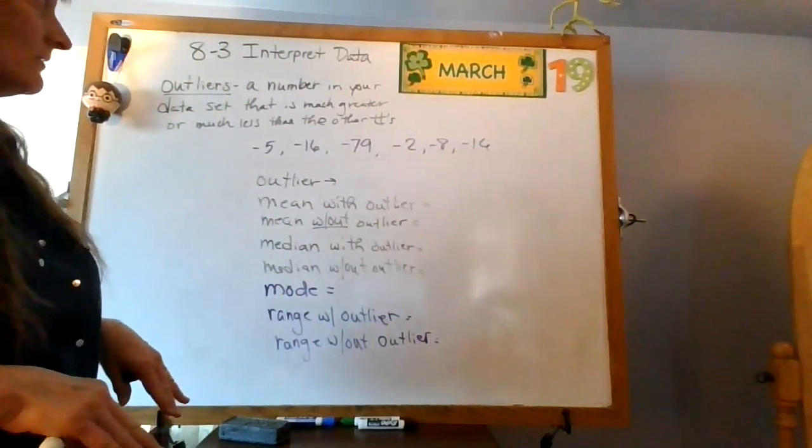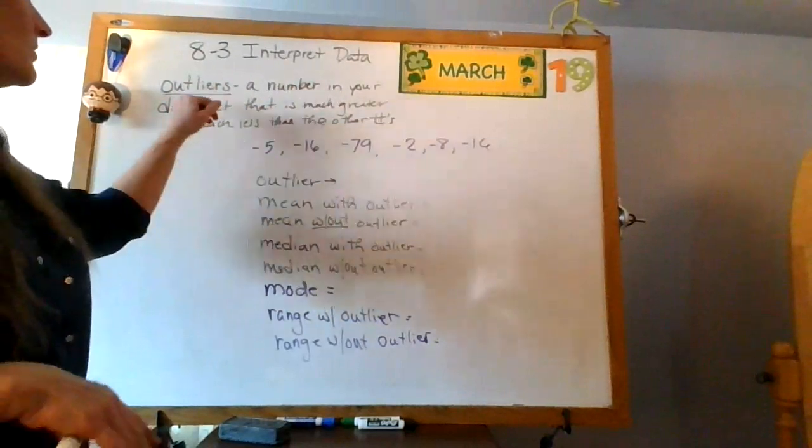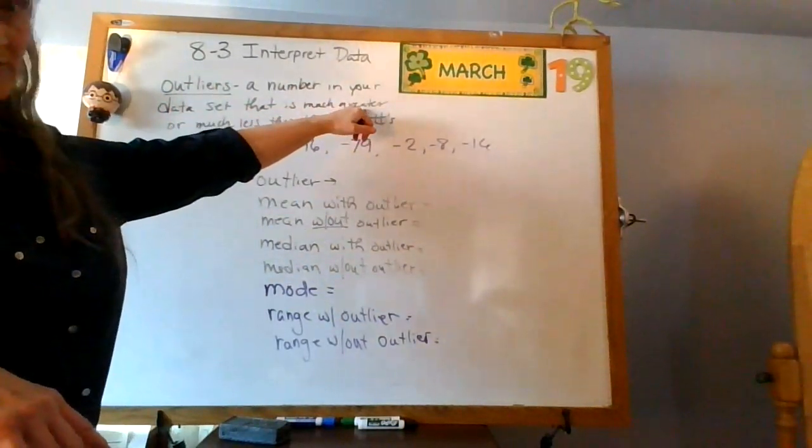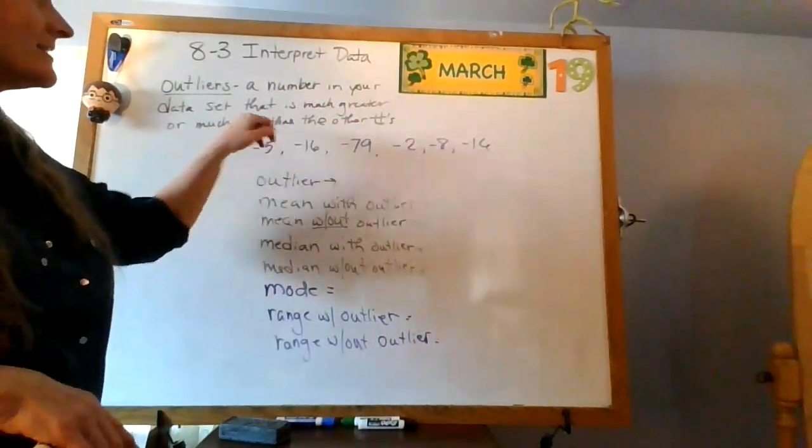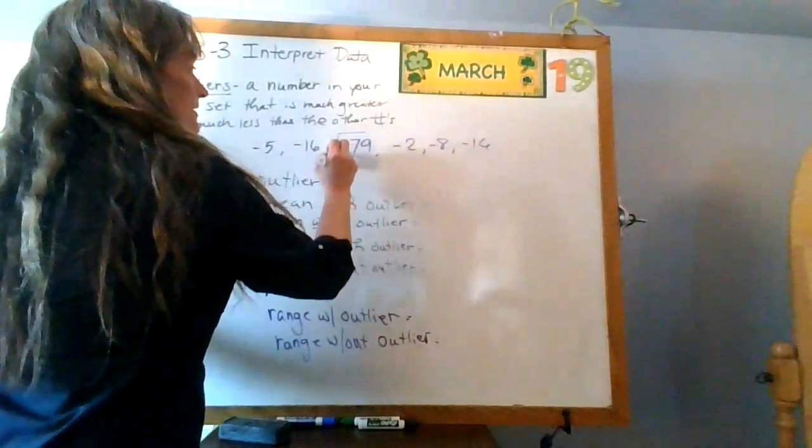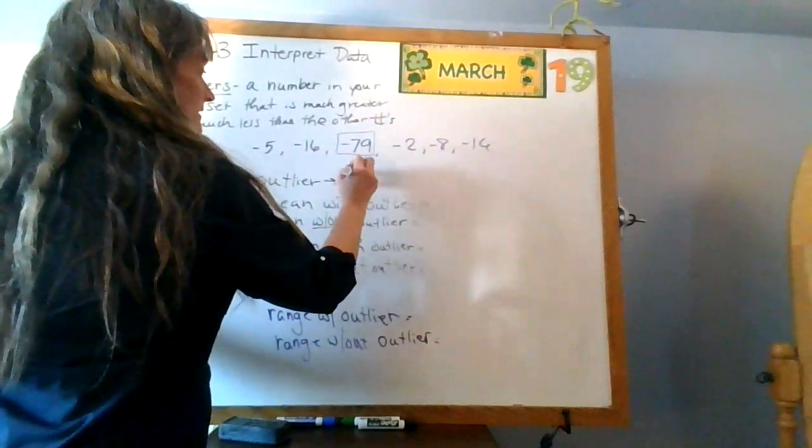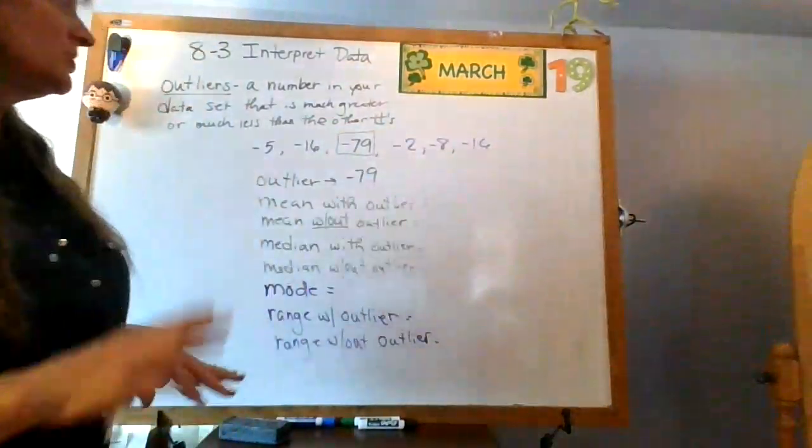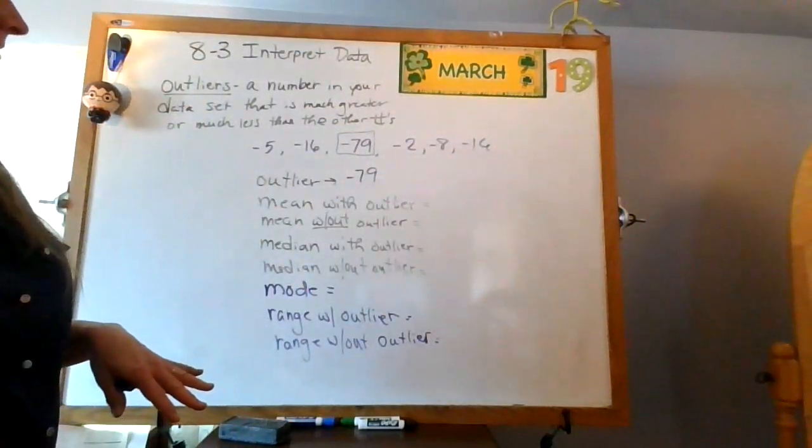So do I have an outlier? Remember, an outlier is a number in your data set that is much greater, that's what we did last time, or much less than the others. Do you have an outlier here? We sure do. It is negative 679. That one is much different than the other numbers, okay?